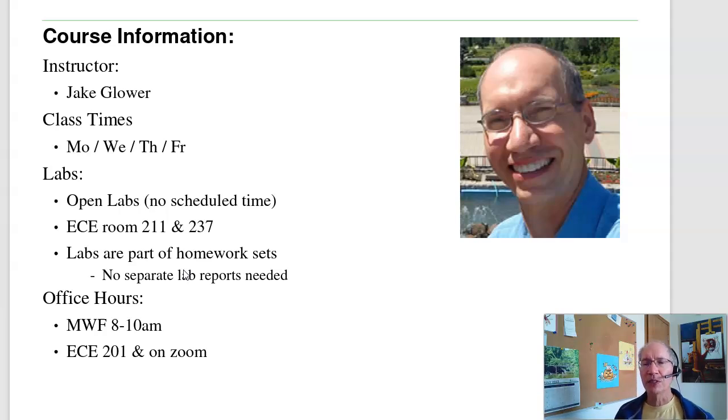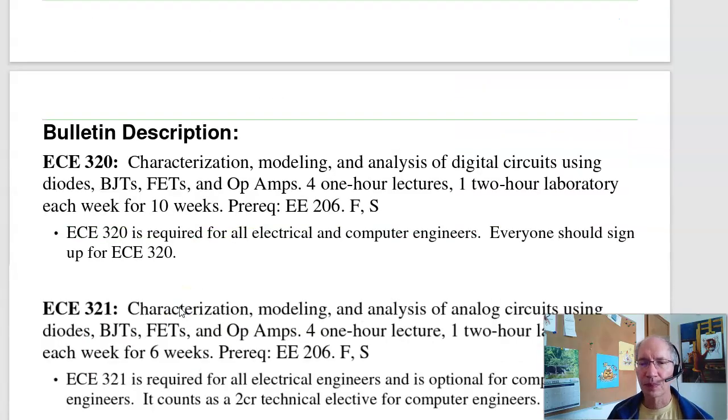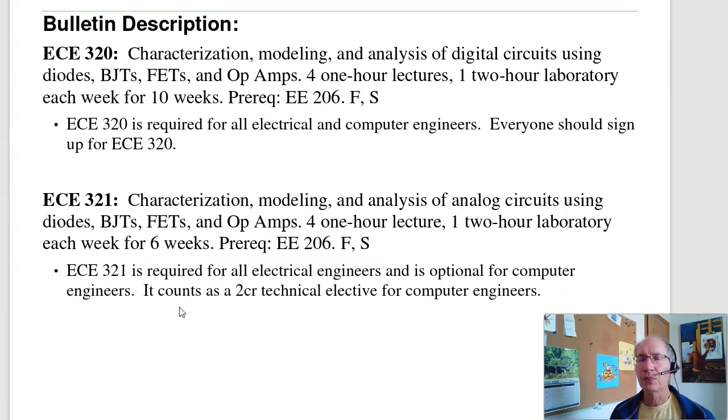My office hours are Monday, Wednesday, Friday, 8 to 10 a.m., in ECE room 201, as well as on Zoom. And the Zoom links will be sent out a little bit later by the start of the semester. In terms of the bulletin description, there's actually two electronics courses. Digital electronics is 320. Analog electronics, 321. It's basically the study of semiconductors, what you can do with them. And this course with a binary output, the motor's on or off, full forward, full reverse. In 321, you can do analog outputs. Have the motor accelerate, decelerate, go backwards, output a sine wave.